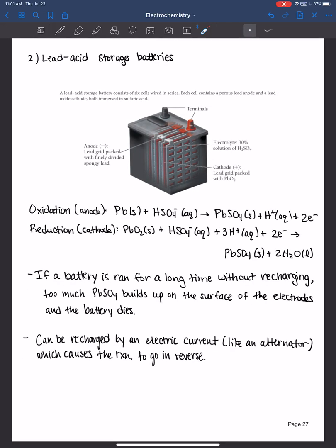Another common battery you come across in everyday life is your car battery. And these are lead acid storage batteries. They consist of six cells wired in a series. Each cell contains a porous lead anode, that's where the oxidation occurs, and a lead oxide cathode, that's where the reduction occurs. And they both are immersed in sulfuric acid, which we all know is a strong acid. And so this is occurring under strongly acidic conditions, rather than the basic conditions that we just saw in the alkaline dry cell battery.